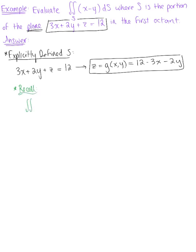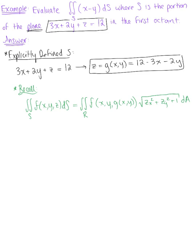We want to recall how to define surface integrals of explicitly defined surfaces. We have the double integral over surface S of a function F of XYZ, and we convert this to a double integral over region R, redefining F of XYZ and multiplying by the magnitude of the normal vector: the square root of the partial derivative of Z with respect to X squared, plus the partial derivative of Z with respect to Y squared, plus 1, dA.